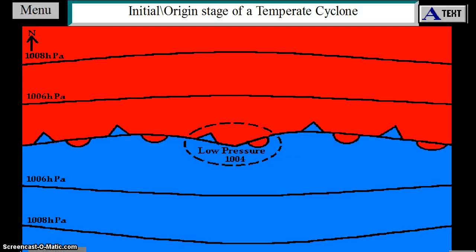The initial or origin stage of a temperate or mid-latitude cyclone. The frontal surface is disturbed by an acceleration of one of the two air masses.